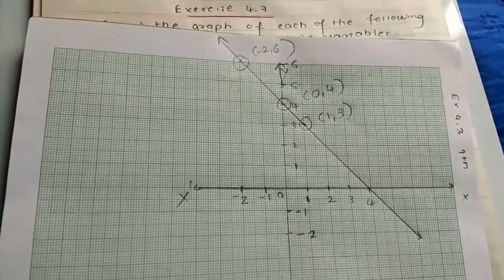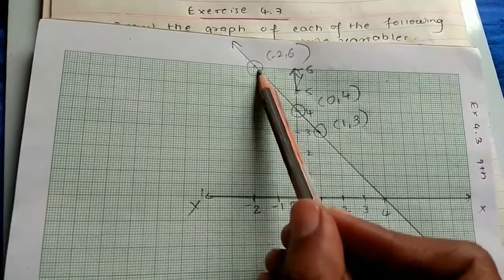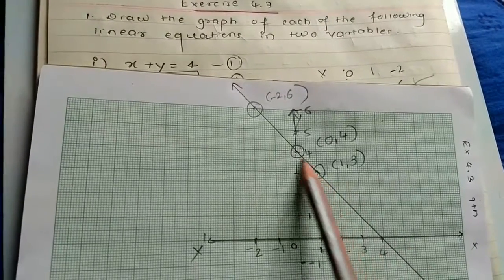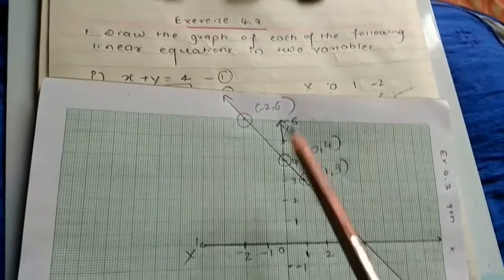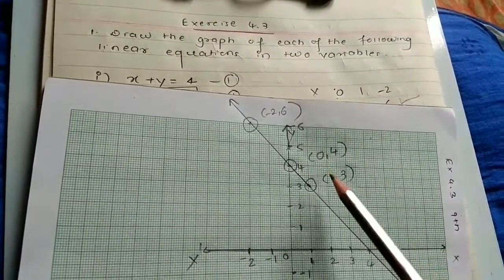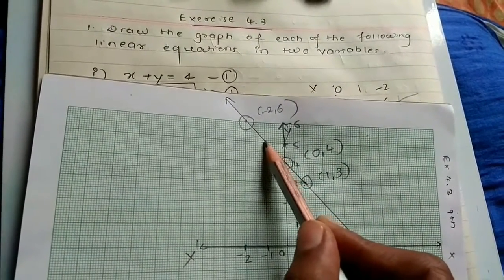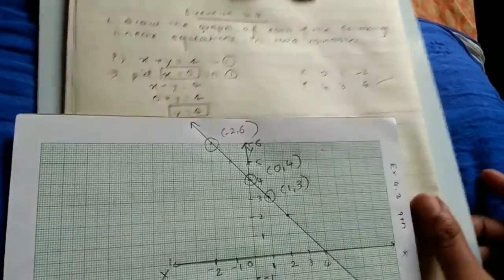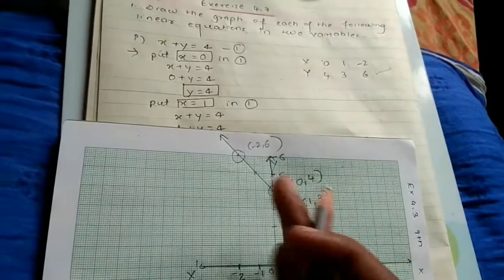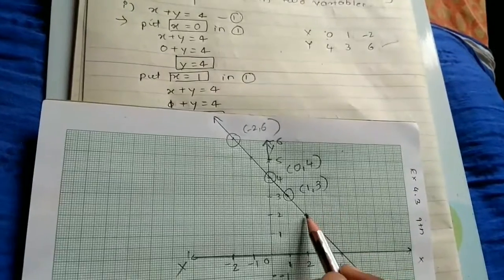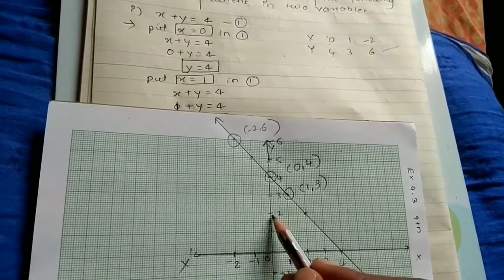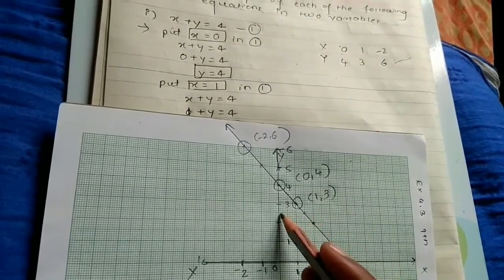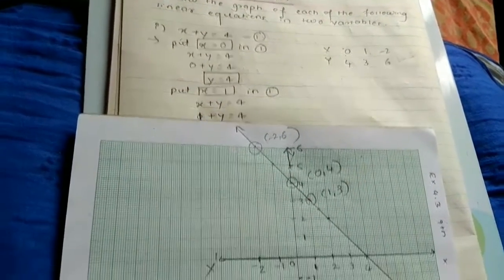Join these three points and extend the line in both directions. Why? Because linear equations in two variables have infinitely many solutions — all points on this line are solutions of X and Y. For example, X equals minus 1 and Y equals 5 is also a solution. Once you have the straight line, you can find as many solutions as you need: X equals 2 gives Y equals 2, and X equals 1.5 gives Y equals 2.5. That is why linear equations in two variables are said to have infinitely many solutions.